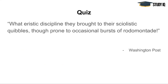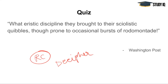Now, if we look at today's passage, you can write in the comment section what is the meaning of this sentence. Because, as we are talking about RC, your RC becomes strong when you are able to understand, infer, and decipher the text. So you can write in the comment section what is the meaning of this particular sentence: 'What heuristic discipline they brought to their sciolistic quibbles, though prone to occasional bursts of rhodomontade.' This is a particular sentence from the Washington Post. We will discuss it towards the end of the video, but you can write your understanding in the comment section.